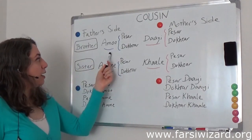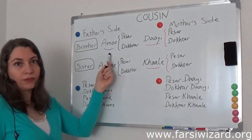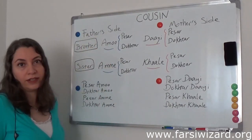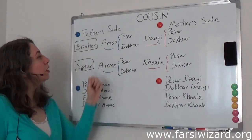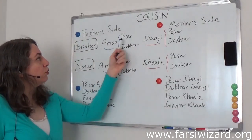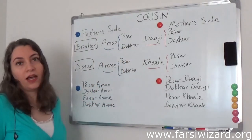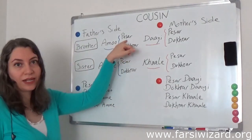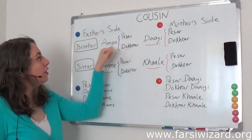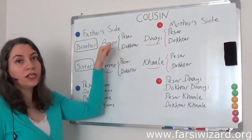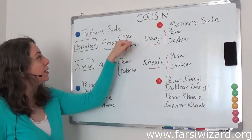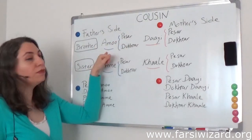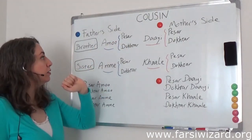Starting with 'amu,' this word refers to the brother of your father. If your amu has a son — 'pesar,' which is the word for son — this cousin will be your 'pesar amu,' literally 'son of paternal uncle.'